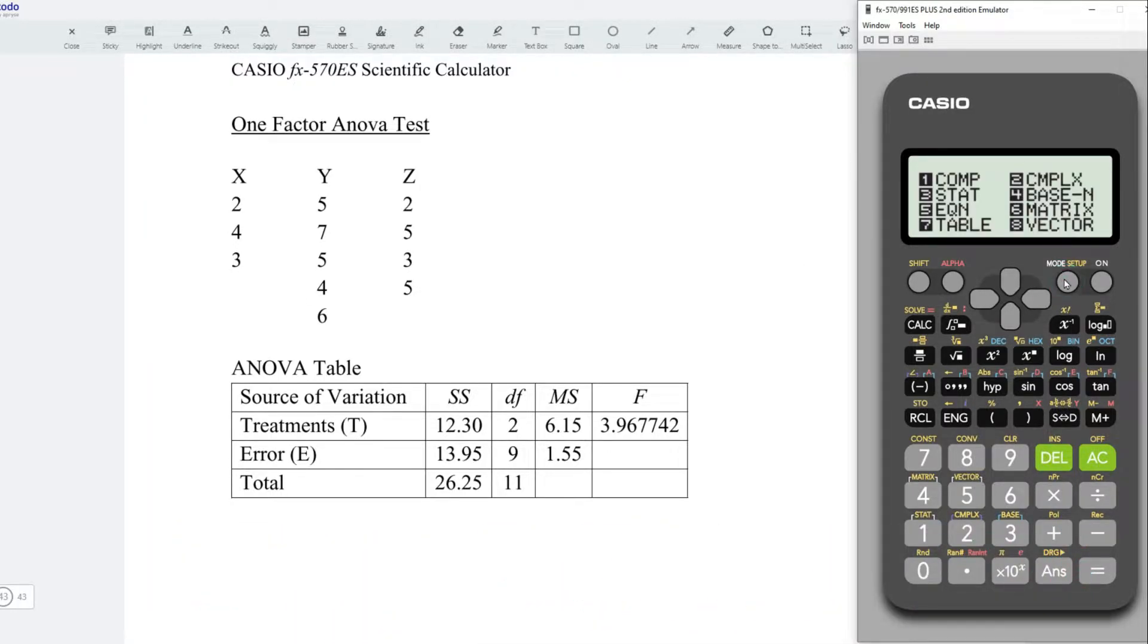Firstly, press on mode and look for the statistic function, that is number 3. Choose one for one variable. Let's start with treatment X. Enter values. We have 2 equal, 4 equal, and 3 equal. Press on AC.